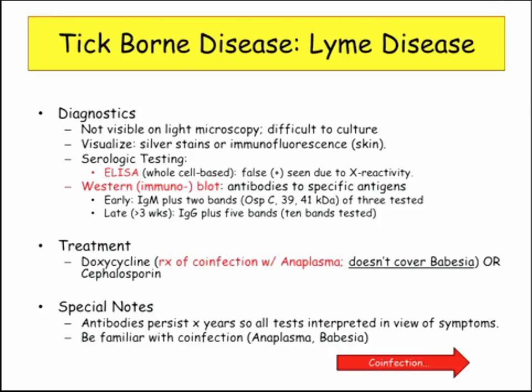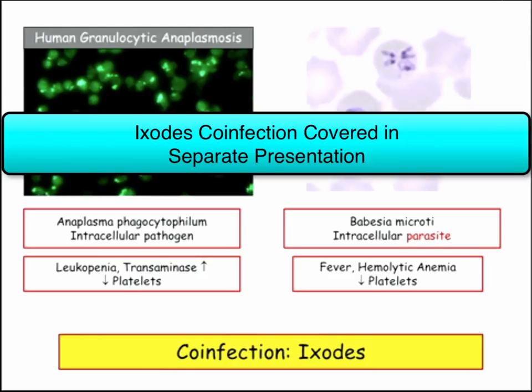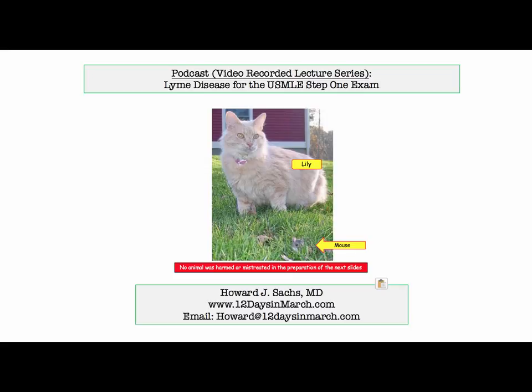They do like to discuss co-infections — Anaplasma and Babesia. Babesia is a co-infection not covered by doxycycline, so they'll need to give you more information for that. Lastly, antibodies persist — once you have the antibodies, you have the antibodies, so we don't just keep rechecking. You have to have the clinical syndrome. Be familiar with co-infections. That concludes this discussion of Lyme disease for the USMLE Step 1 exam. If you have any questions, please email 12 Days in March.